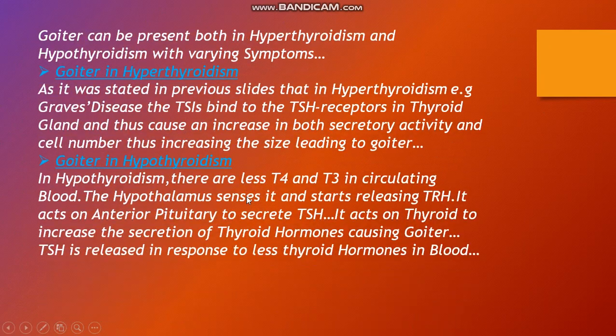A goiter appears as swelling in the anterior aspect of the neck. Goiter can be present in both hyperthyroidism and hypothyroidism with varying symptoms. In hyperthyroidism, for example Graves' disease, TSI binds to TSI receptors in the thyroid gland and causes an increase in both secretory activity and cell number, thus increasing the size of the gland, leading to goiter.